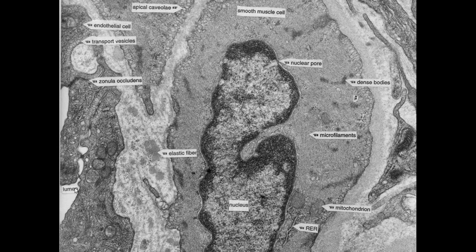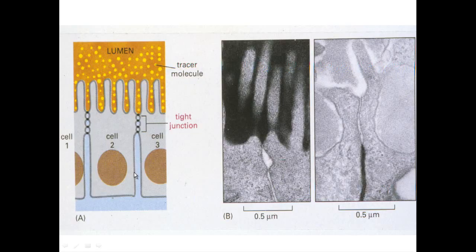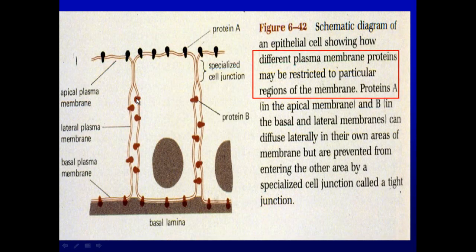These tight junctions will prevent things from the lumen from passing into the base and vice versa. What is in the lumen cannot get through, and what is in the base cannot get into the lumen. So tight junctions restrict the passage of substances between adjacent cells.